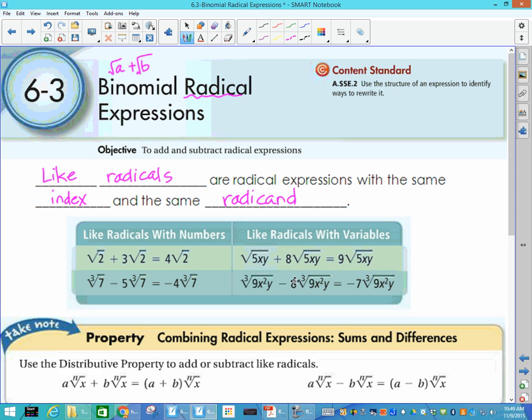But when you get into ones with variables that are a little bit harder to read, you're saying the cube root of 9x squared y minus 8 cube roots of 9x squared y. It gets a little cumbersome to say that, so I actually refer to them as blobs. So this is like a blob plus 8 blobs equals 9 blobs, because those blobs have to be exactly the same. If you have a blob and you have 8 more, then you have a total of 9 blobs. If you have a blob and you take away 8 blobs, then you have negative 7 blobs. That thing does not change. The blob does not change.